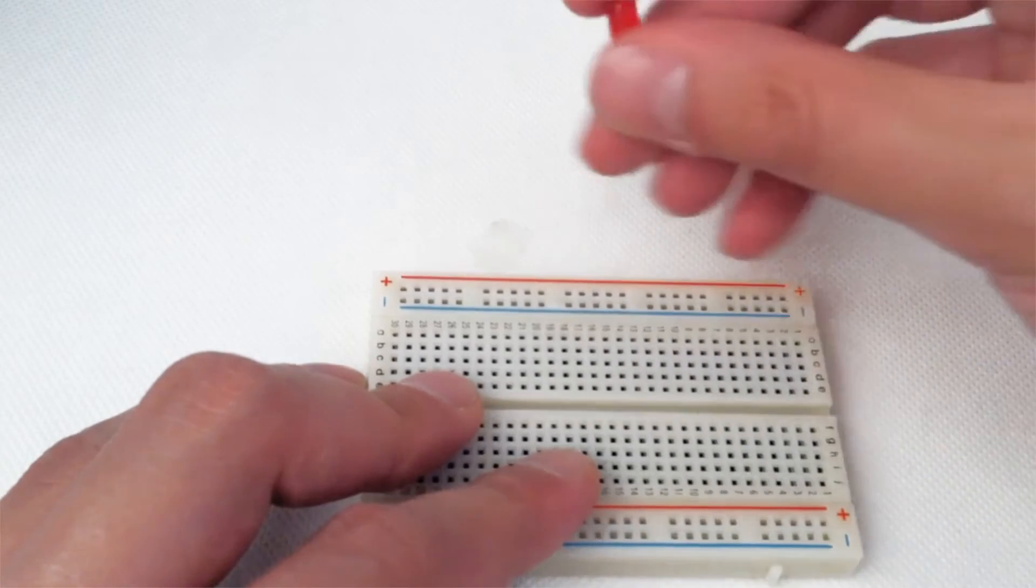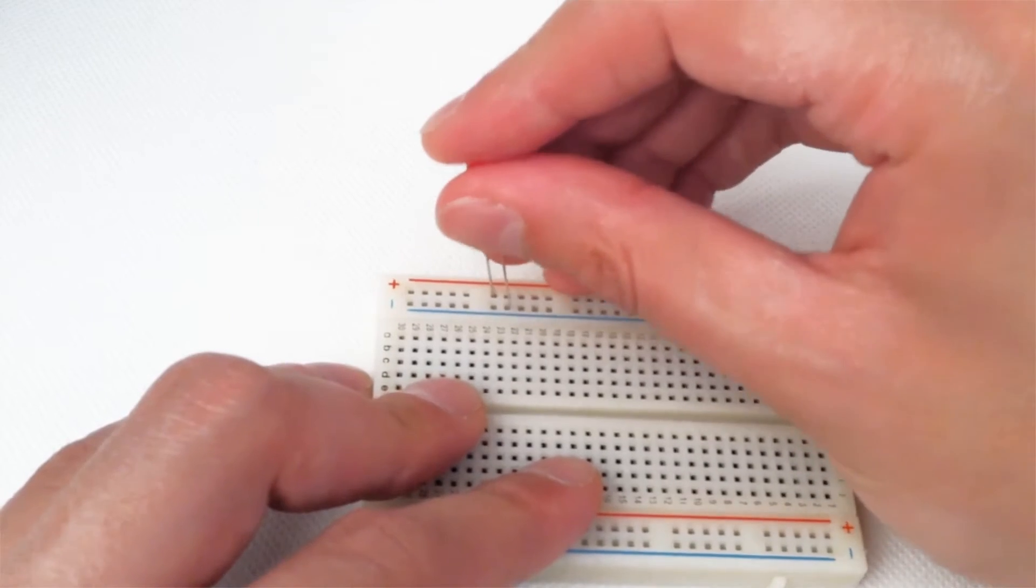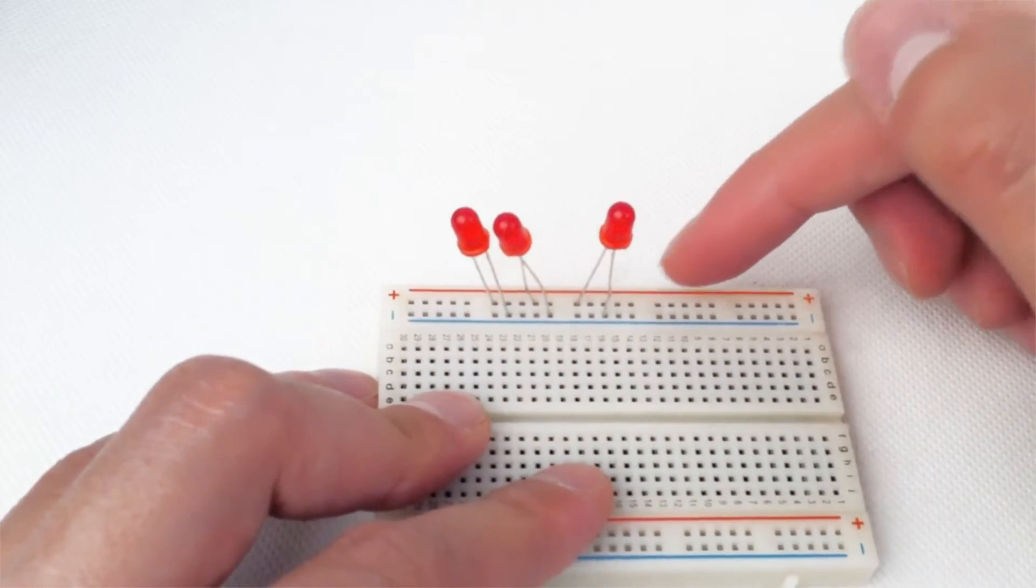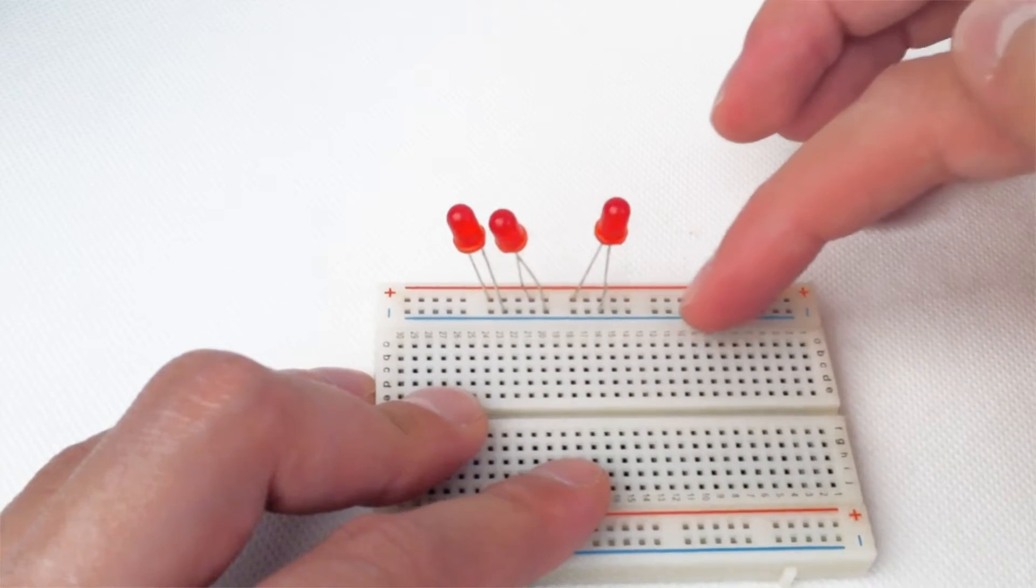Make sure it goes in properly. Now you can see the positive terminals are all connected to this end, the negative terminals connect to this end. Because this power rail is electrically connected across the whole length of it, the power doesn't need to travel through each LED.